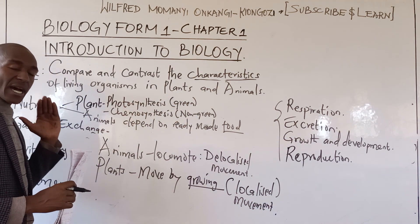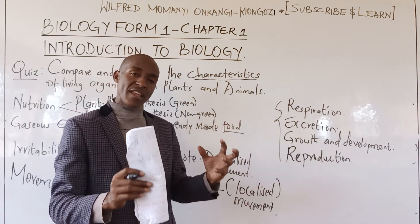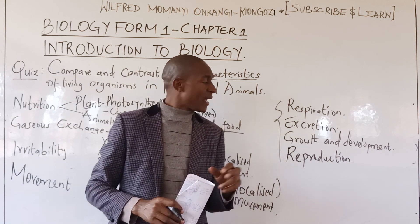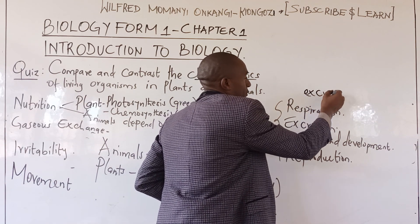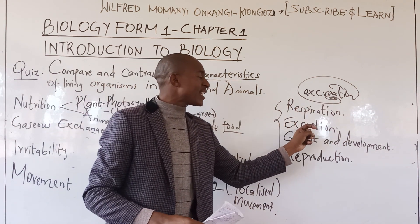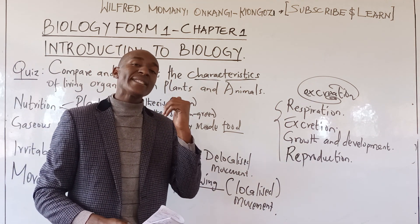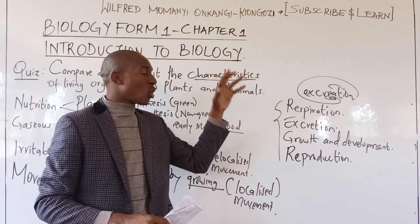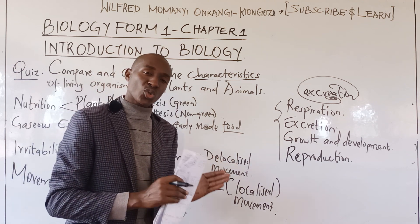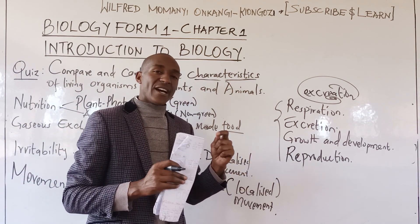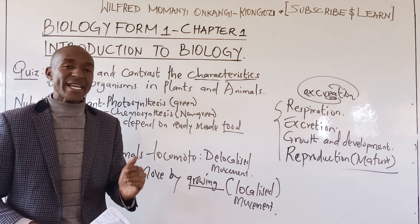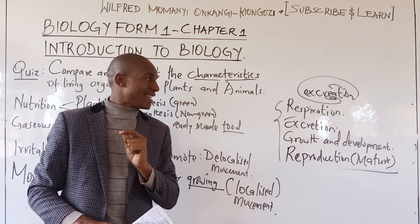The first four characteristics give sharp differences. When it comes to respiration, all living organisms respire and respiration requires oxygen — useful for both plants and animals. Excretion — and remember, don't say 'excreation' — is the removal of waste products of metabolism; all organisms excrete. Growth and development: all living organisms grow and develop. And reproduction: mature living organisms give rise to young ones of the same kind.